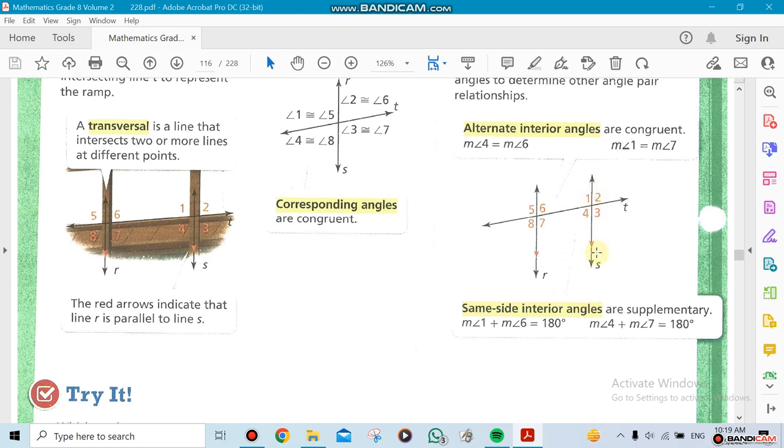S cannot be a transversal line. F cannot be a transversal line because it only cuts one line. But T, because it cuts two or more, that means it's a transversal line. Now there's rules that we're going to be following about the angles. That's what we'll be learning.